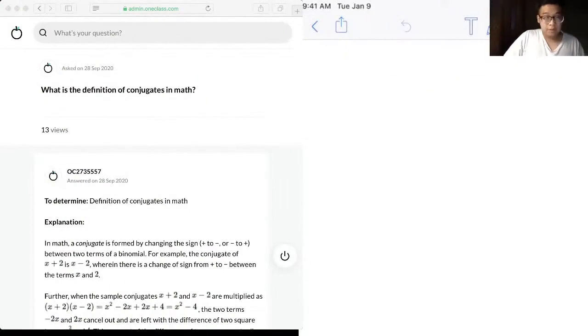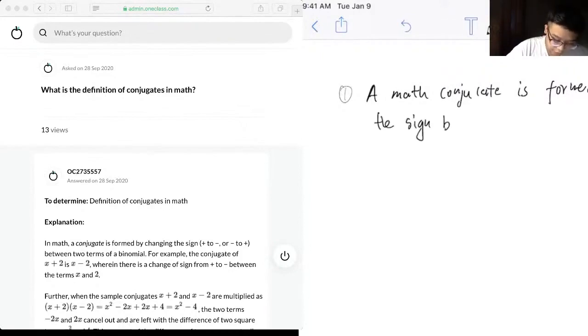So the first question, it asks what is the definition of conjugate in math. So here are a couple of things I want to mention. So math conjugate is formed by changing the sign between two terms in a binomial.